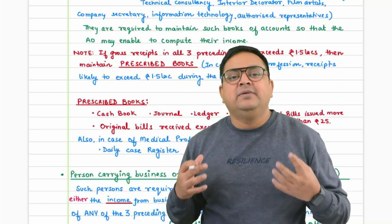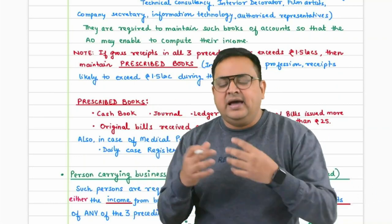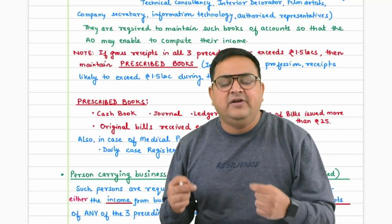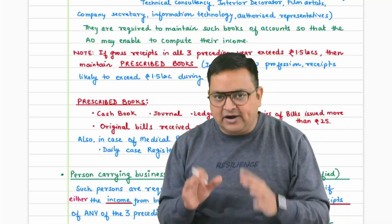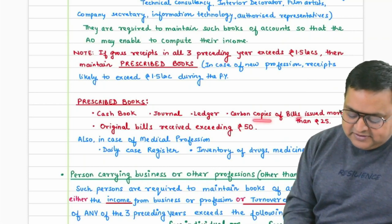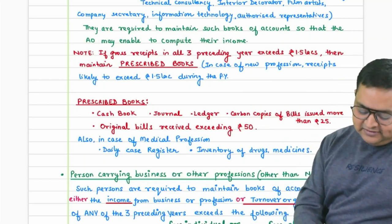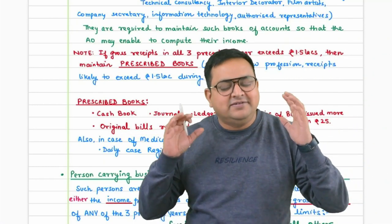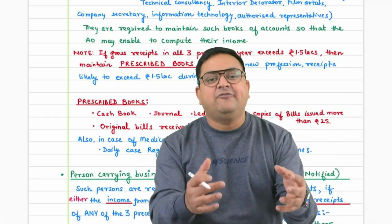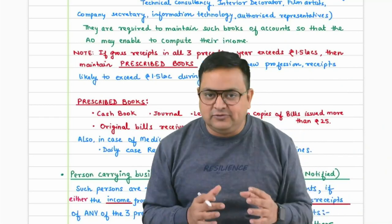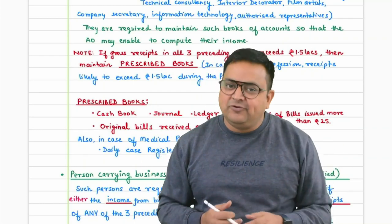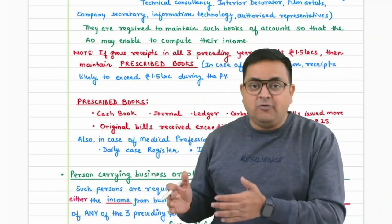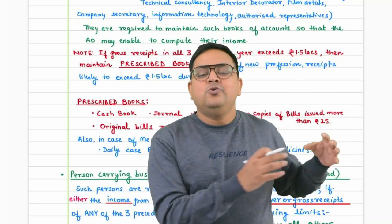These books and records must be preserved for six years. This six-year period is important and may appear in MCQs. Now for the second group: persons carrying business or other professions (not notified professions) are not automatically required to maintain books of accounts — it depends on whether their income or turnover exceeds certain limits.